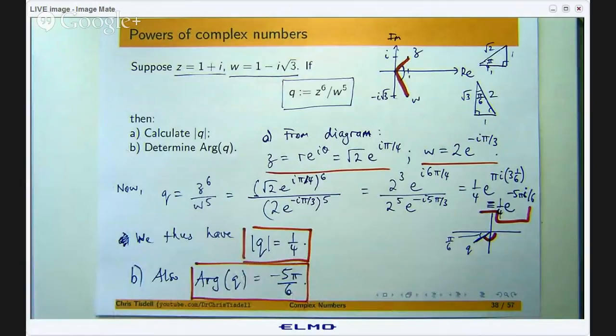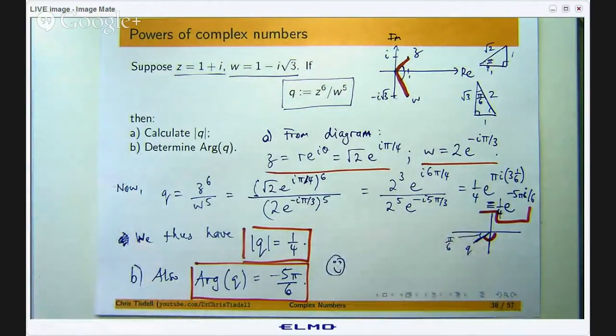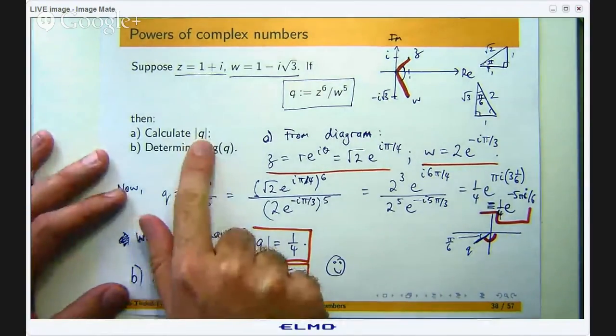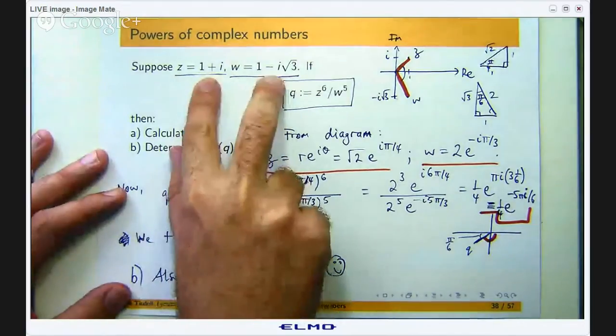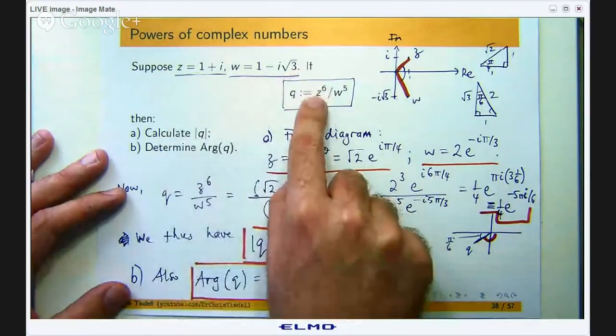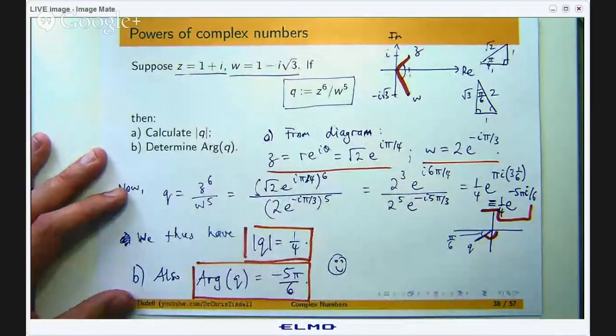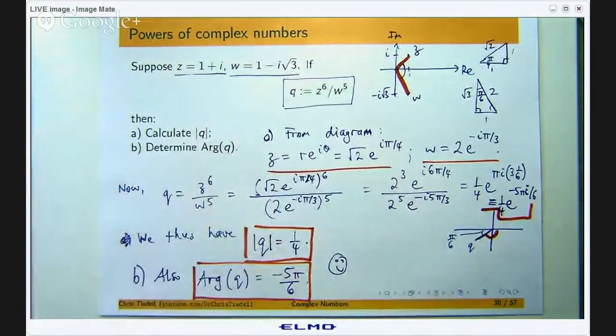A couple of things: always draw a diagram if you can, it will simplify the calculations. Less algebra, less chance to make a mistake. As you can see the polar trig form is used to simplify powers and multiplications and divisions. If you wanted to nitpick you could say you can easily calculate the length from those two forms and take that length to the power 6 and 5 and divide. Yes you could do that but that will not help you in the second part in determining the angle.